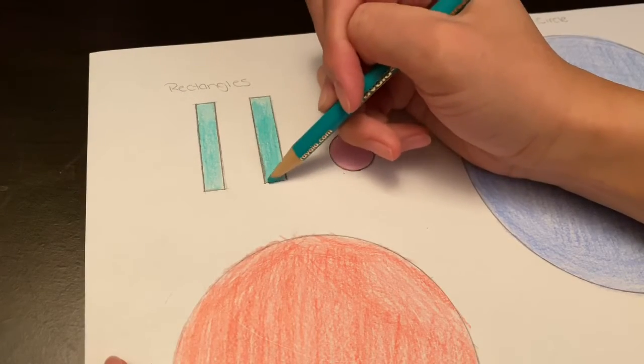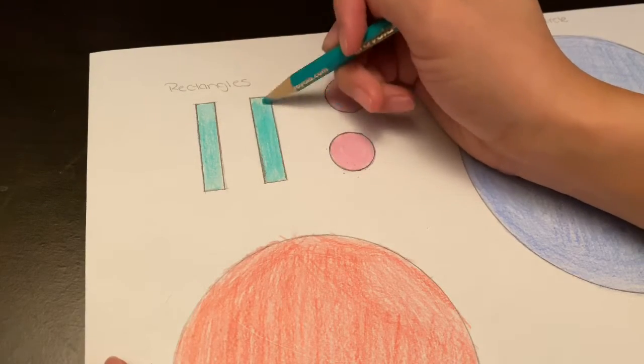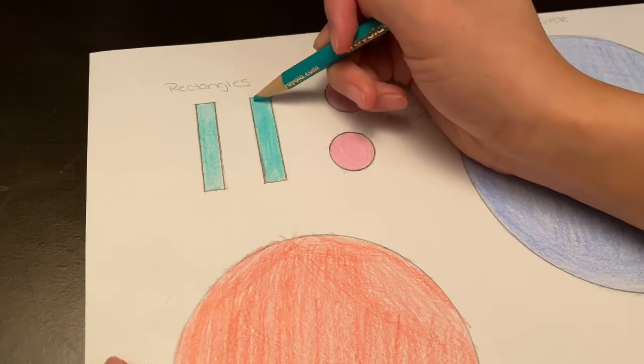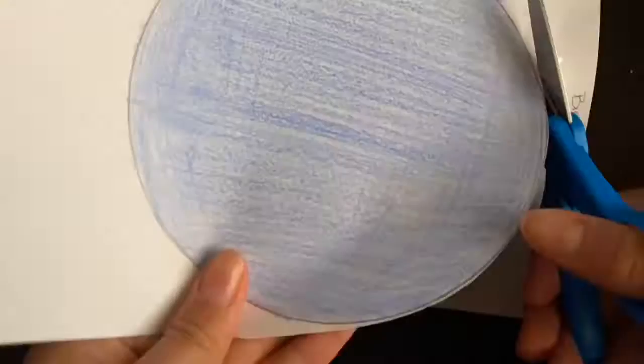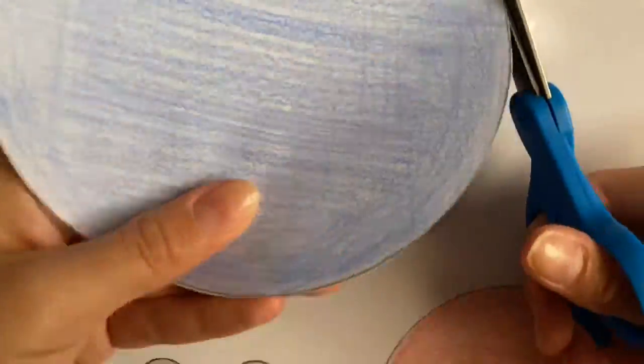Now you have to color in your shapes. You can color in any color you want. After you're done coloring then we're gonna cut out all our shapes.